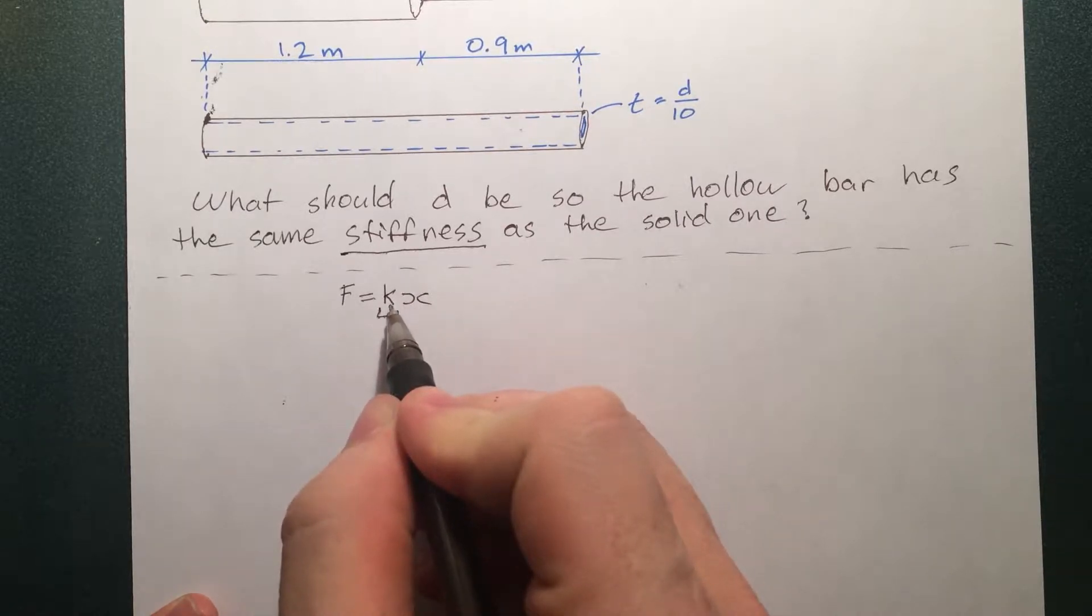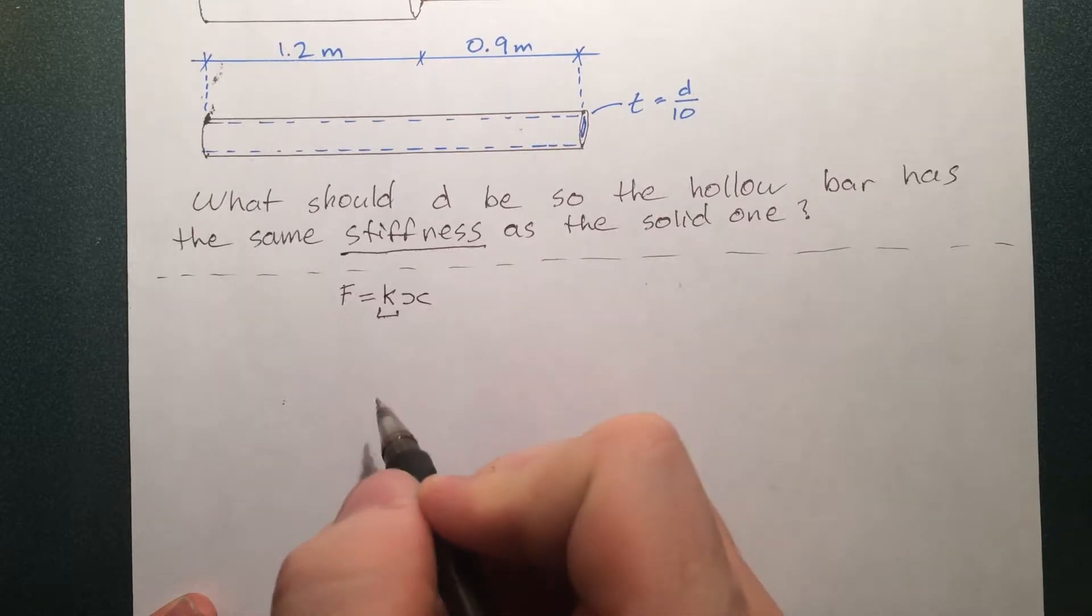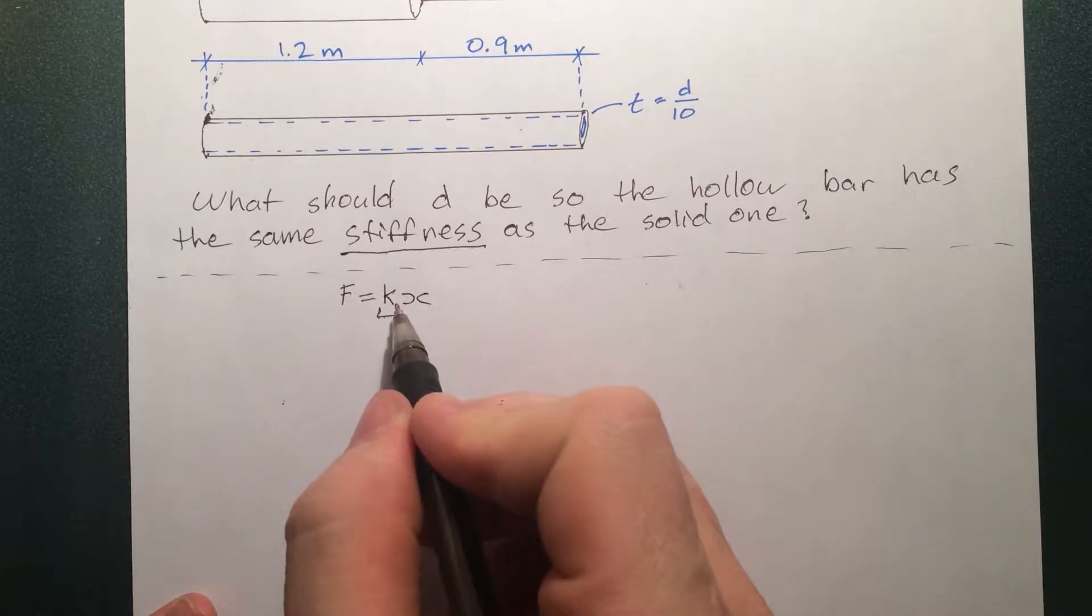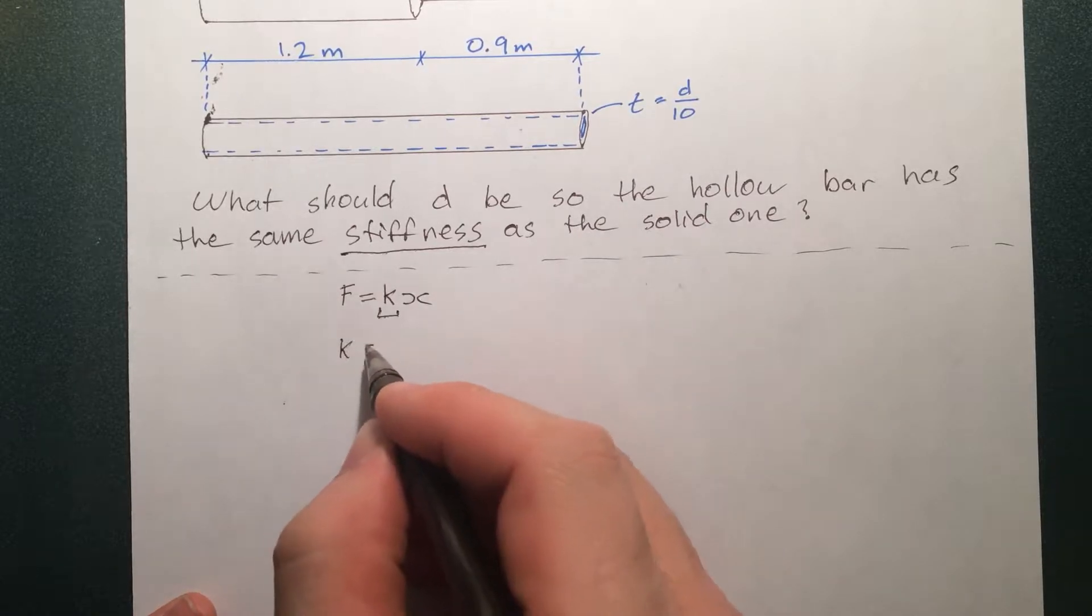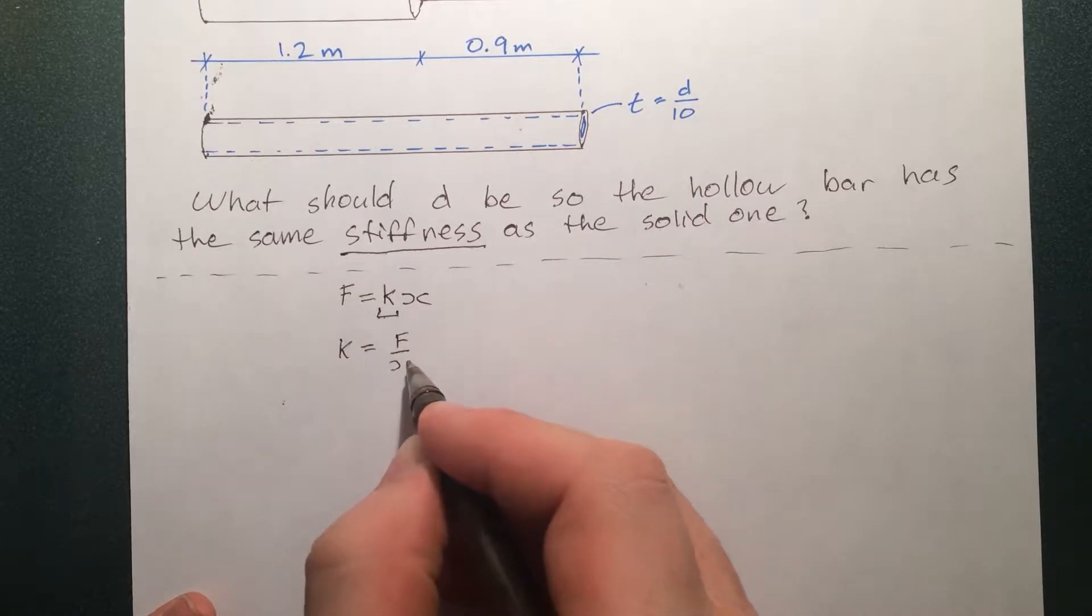If K is low, we put like a force on there, we get a big displacement. If K is high, we put a force on there, we get a small displacement. We can rewrite K as F by X.